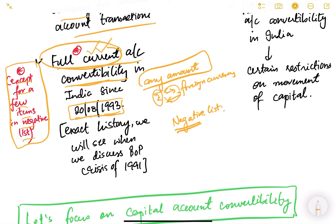The negative list contains goods or services which are not allowed to be traded — for example, items that may be harmful. You cannot convert currencies for transactions involving those items in the negative list. But that is a very small list, so for almost every transaction you can convert rupees 100 percent.